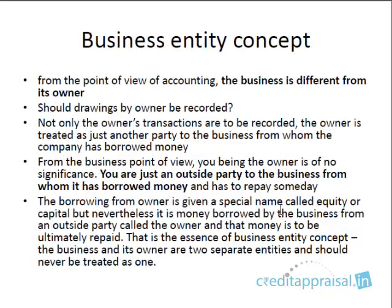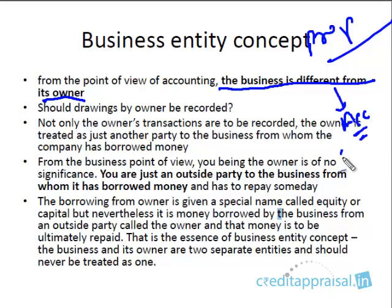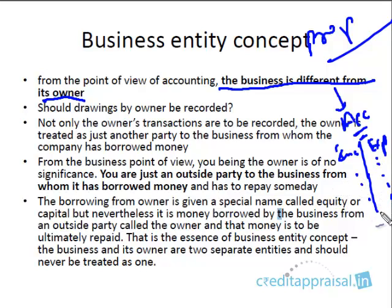The next concept we need to be clear on is the business entity concept. This is a very important concept. Simply put, the business entity concept says that the business is different from the owner. Take for example a proprietorship concern where you are the proprietor — you are running your own business, you have your own staff including an accountant who maintains a record of all income, expenses, and everything the firm receives in the form of sales or other income.